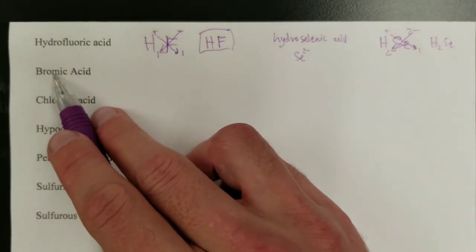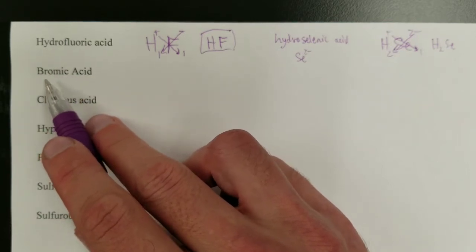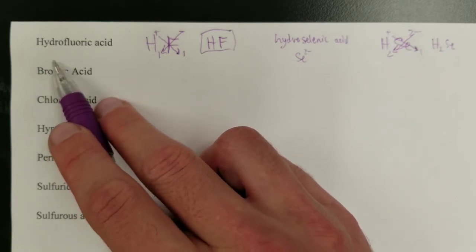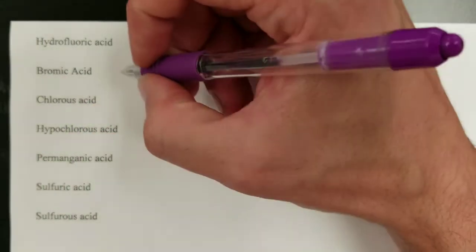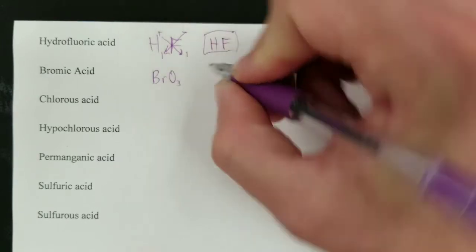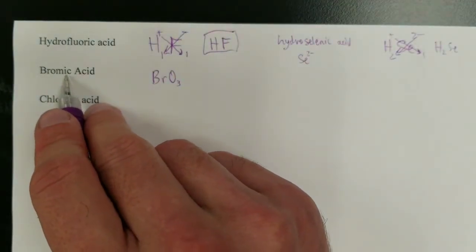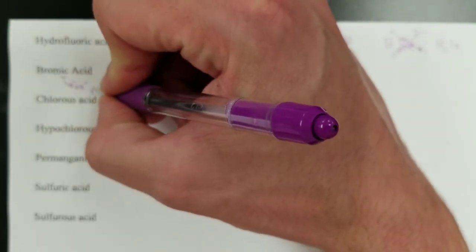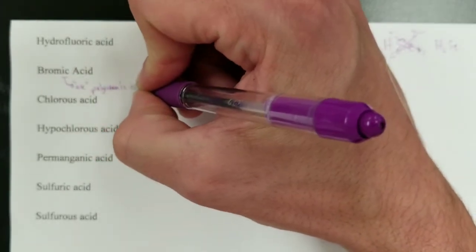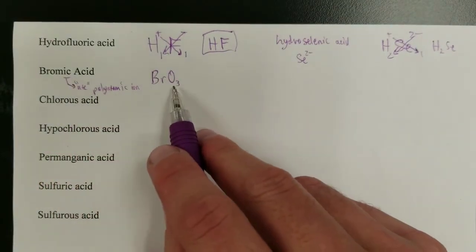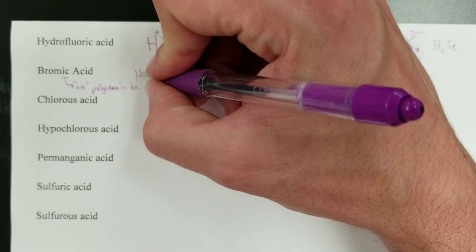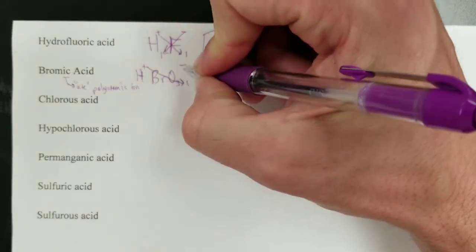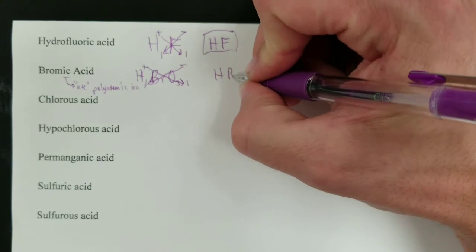Bromic acid involves bromine. There's no 'hydro,' so that means this is not simply HBr — oxygen is in the formula somewhere. Thinking of polyatomic ions involving bromine, BrO₃ is bromate. The '-ic' ending tells us the polyatomic ion ends in '-ate,' confirming it's bromate. Adding hydrogen gives the formula HBrO₃.